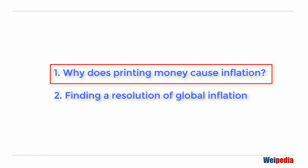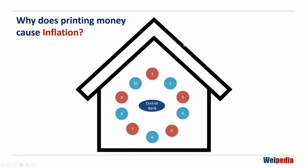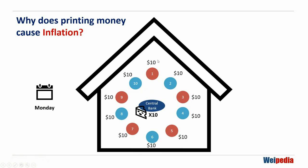Why does money printing cause inflation? Let me use this example about cheesecake. Imagine you are the central bank with a closed economy of 10 individuals. On Monday, you have printed $100 US dollars and you have 10 cheesecakes to sell. You evenly distribute this $100 to 10 persons, so each of them gets $10 and each buys one cheesecake. Every one of them got a cheesecake for $10.